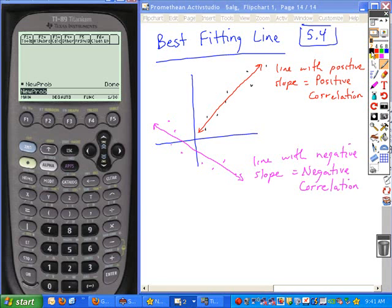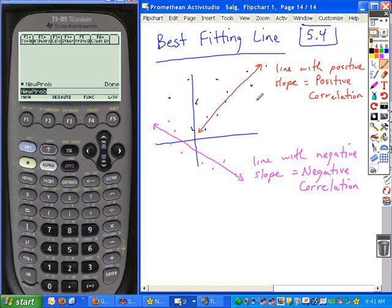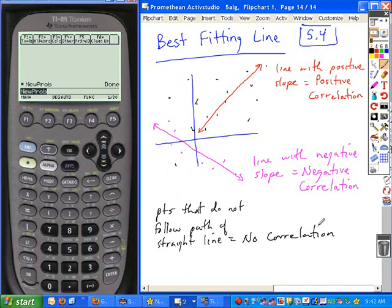Now if you have a set of points that are all over the place, the black points just randomly plotted all over the place, then you'd have no correlation. So here's the three different things that you would be looking at.